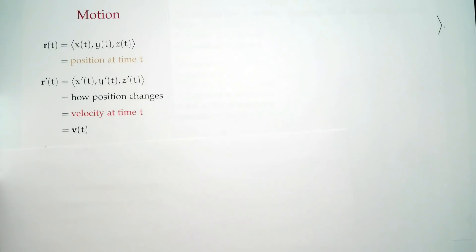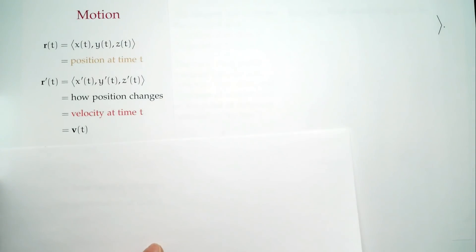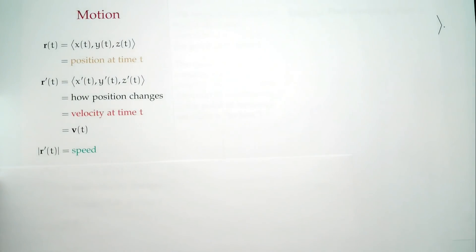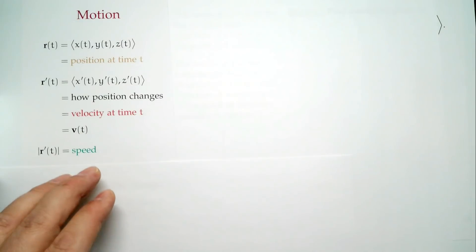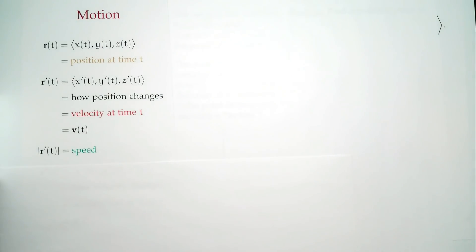Velocity is a vector with two aspects: direction and magnitude. The magnitude of velocity is speed. If you want speed, take the magnitude. If you want direction, find the corresponding unit vector by scaling out.